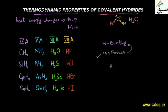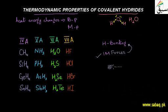In hydrogen bonding, one molecule involves a very electronegative element. For example, in HF, fluorine is very electronegative, so electrons shift to one side of the molecule. The other HF molecule's hydrogen is attracted — this is an intermolecular bond involving a highly electronegative atom.